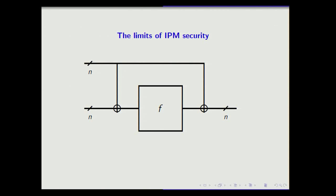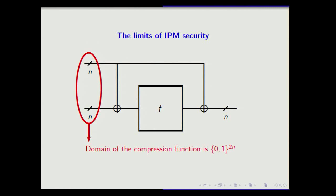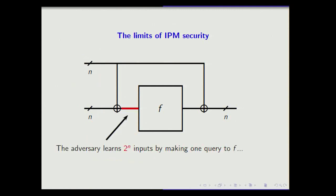Here is an example compression function using a smaller primitive. The function f will be a random n-bit to n-bit permutation — that's my smaller primitive. The domain, shown on the left, goes from left to right and has size 2^(2n). All the wires in the picture have length n bits. If the adversary makes a query to f, they will actually learn 2^n different inputs from a single query, because for every query to f, there are 2^n different possible input values that XOR to that queried value.